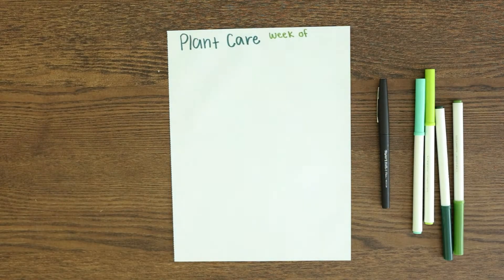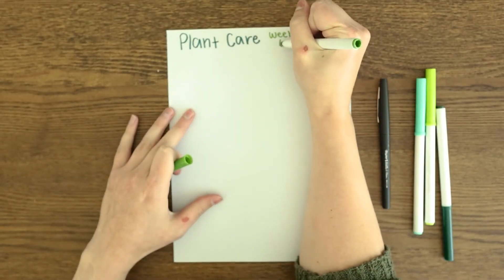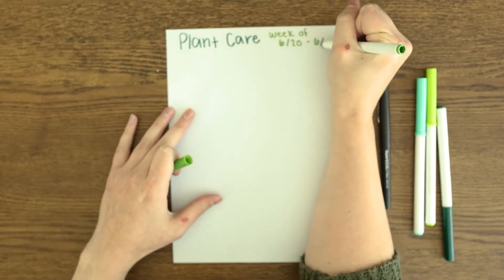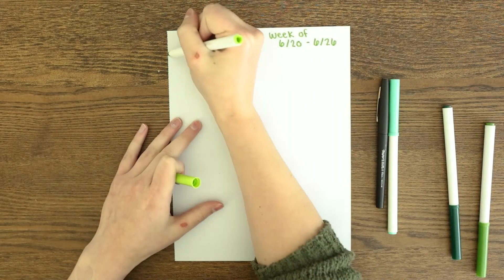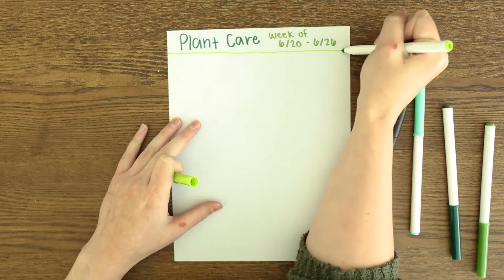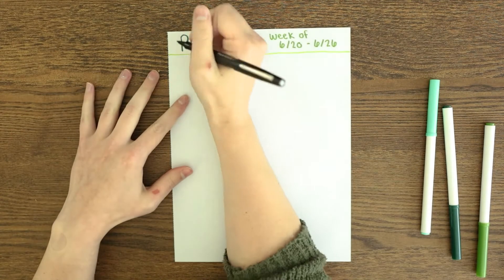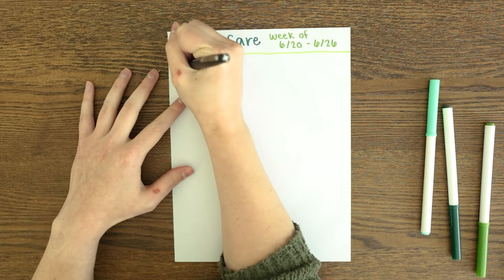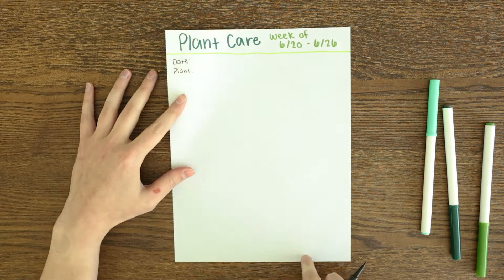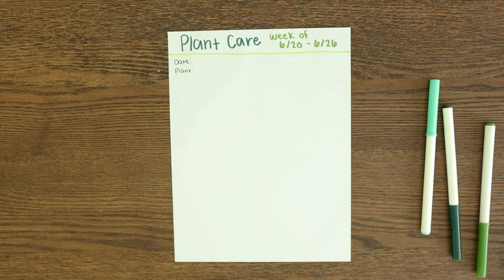All right you guys, this plant care log is just going to be for the next upcoming week for me, which is June 20th through the 26th. I'm going to put two of the care logs on one paper and then put the other logs on the back of the paper, but they'll all be for the week of 6/20 to 6/26.